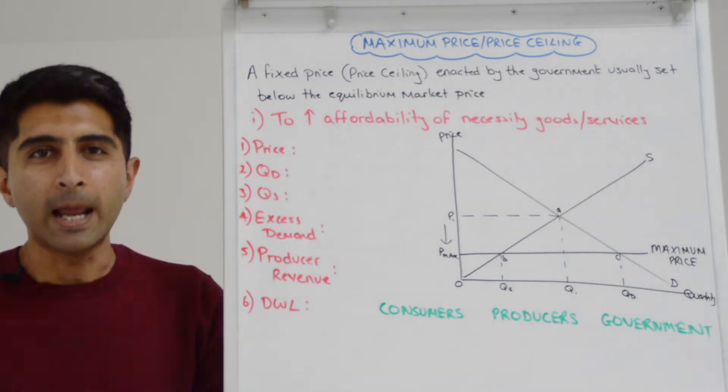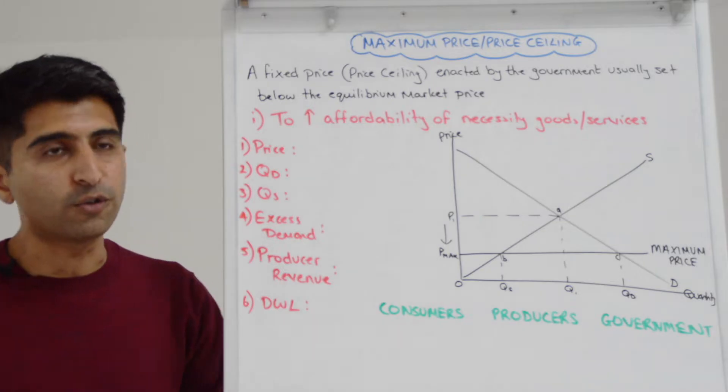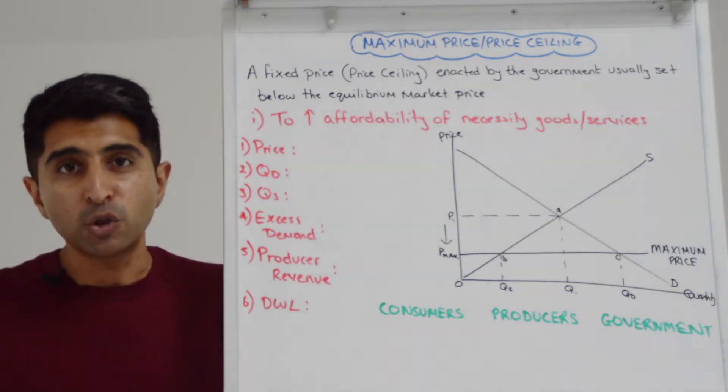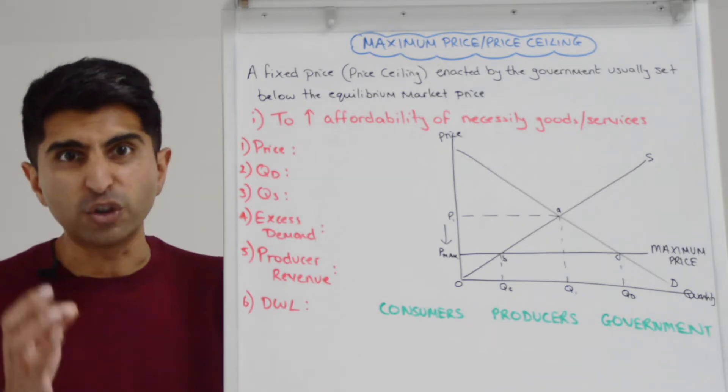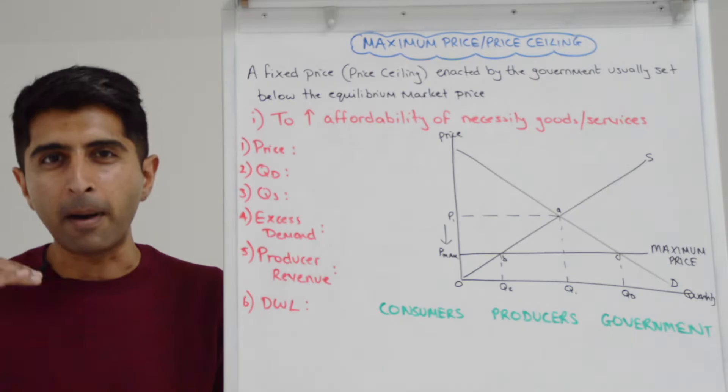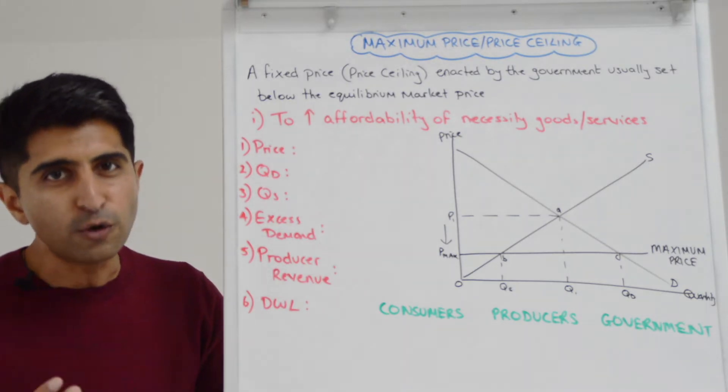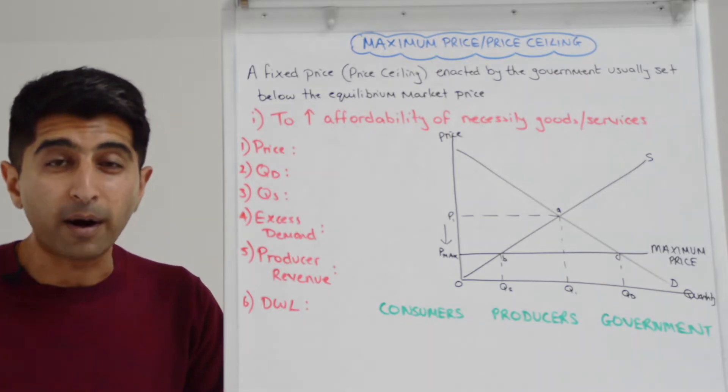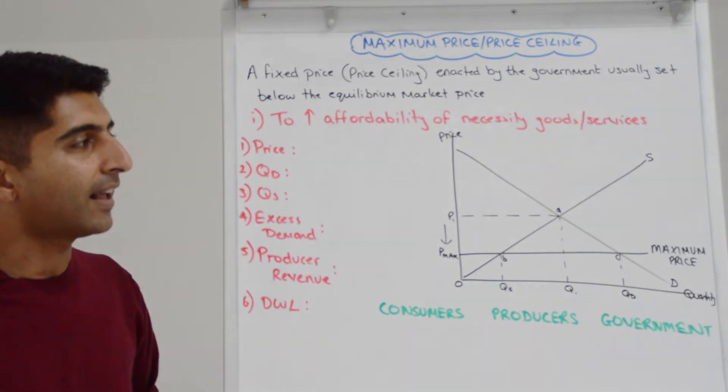And there is only really one reason in microeconomics where we can argue that governments would want to use maximum prices and that is to encourage or to increase the affordability of essential goods and services, of necessity goods and services. If the government feels the market price is efficient but it's not really affordable for most people, they would use maximum prices to try and lower price and encourage greater affordability, allow more consumers to access that market.